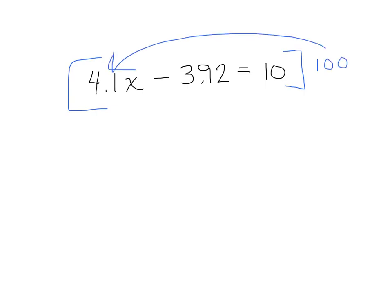If I do something like 4.1x minus 3.92 is equal to 10, for example. If I look, I think about this is tenths, this is hundredths. If I want to get rid of the decimals completely, I can multiply by 100. This would be 410, because what I would basically do in multiplying by 100, think about moving the decimal to the right two places. So 410x minus, if I multiply by 100, that would be 392, will equal, and then this would be 10 times 100, so this would be 1,000.